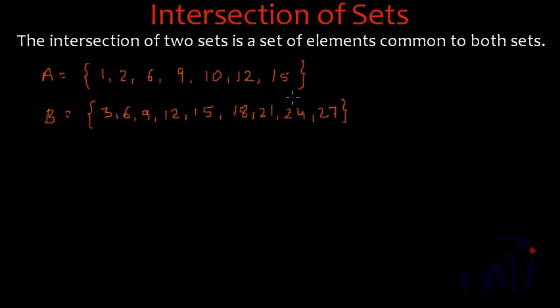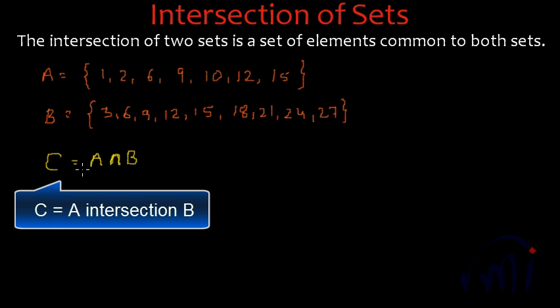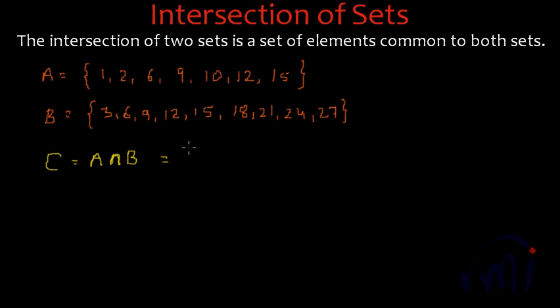Now if I say that the set C is the intersection of set A and B — this sign is the sign of intersection and this is called C is equal to A intersection B — then the elements of this set will be all the elements of set A and B which are common in both the sets.